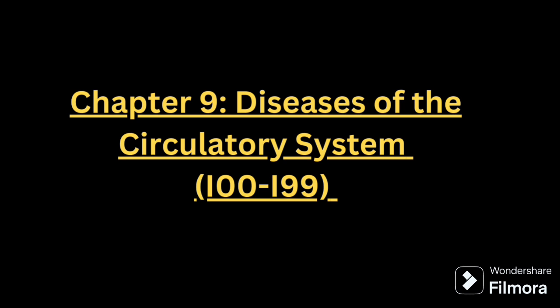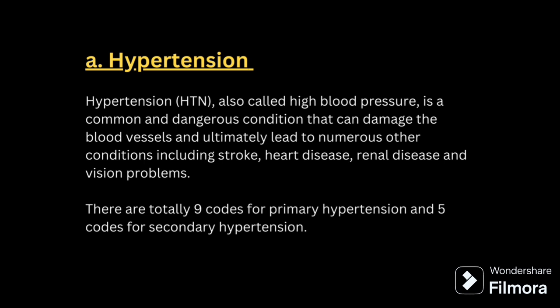Chapter 9: disease of circulatory system, I00-I99. In this chapter we will mainly be dealing with all the conditions coming under the circulatory system — combination codes, hypertension-related conditions, myocardial infarction — everything will be discussed in detail, including how the guidelines are implemented. First we will see hypertension. Hypertension, also called high blood pressure, is a common condition that can damage blood vessels and ultimately lead to stroke, heart disease, renal disease, and vision problems.